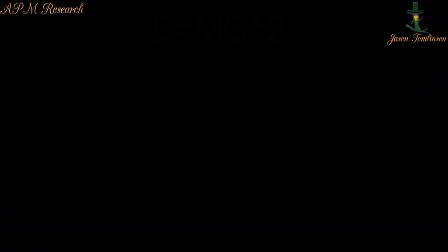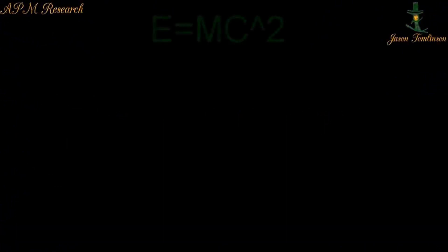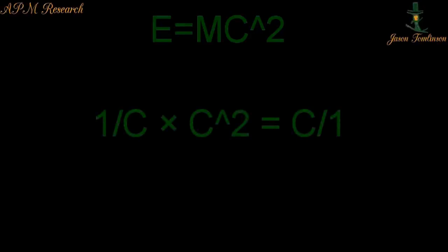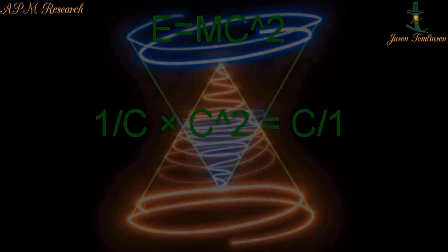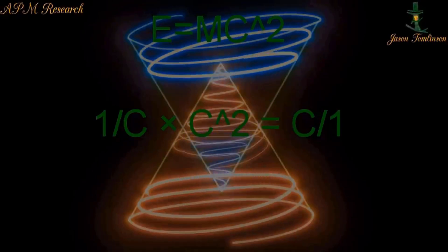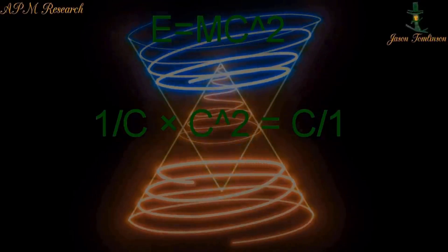The squaring is due to the fact that mass and energy are inverse properties of electromagnetism. When the mass is equal in value to the inverse of the speed of light, the energy is equal to the speed of light. 1 over c times c squared equals c over 1. 1 over c and c over 1 are inverse to each other.